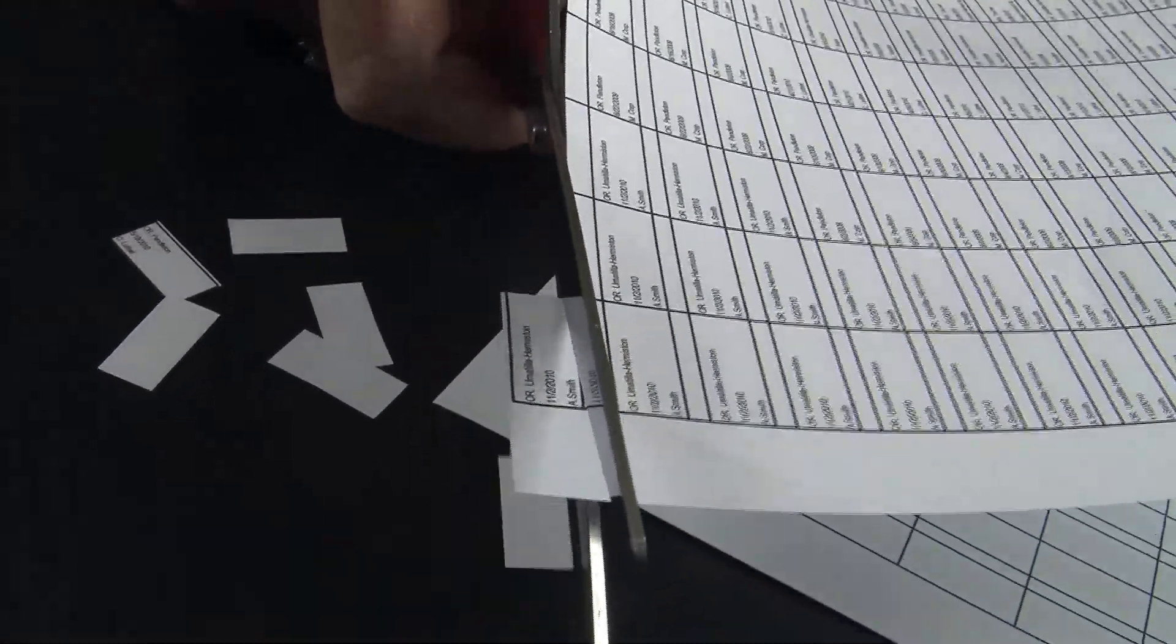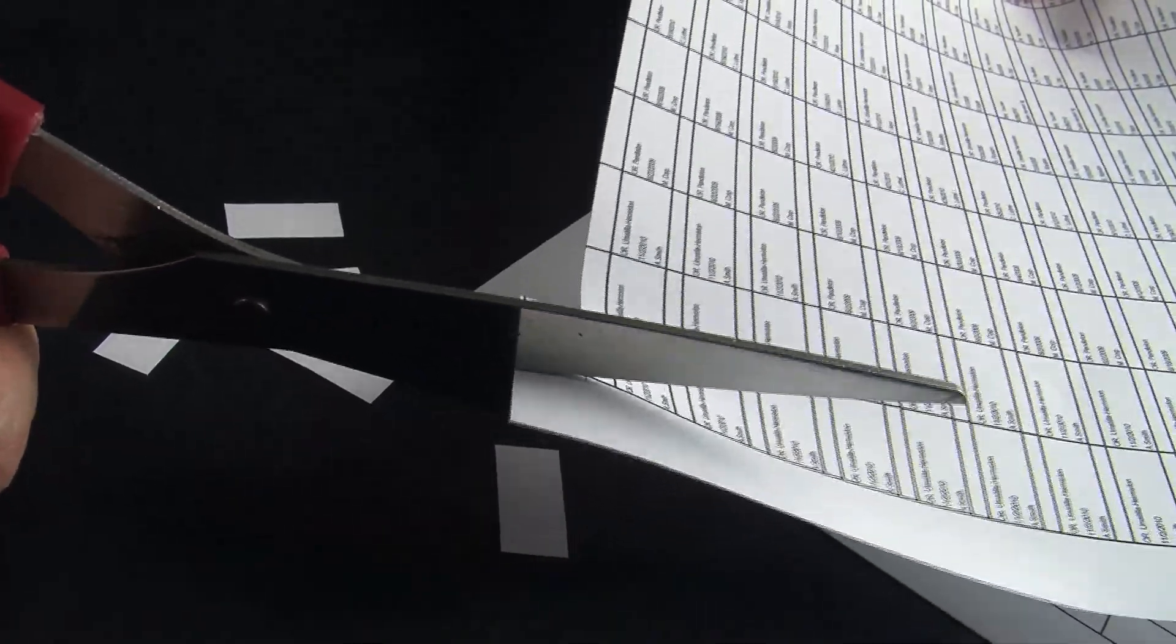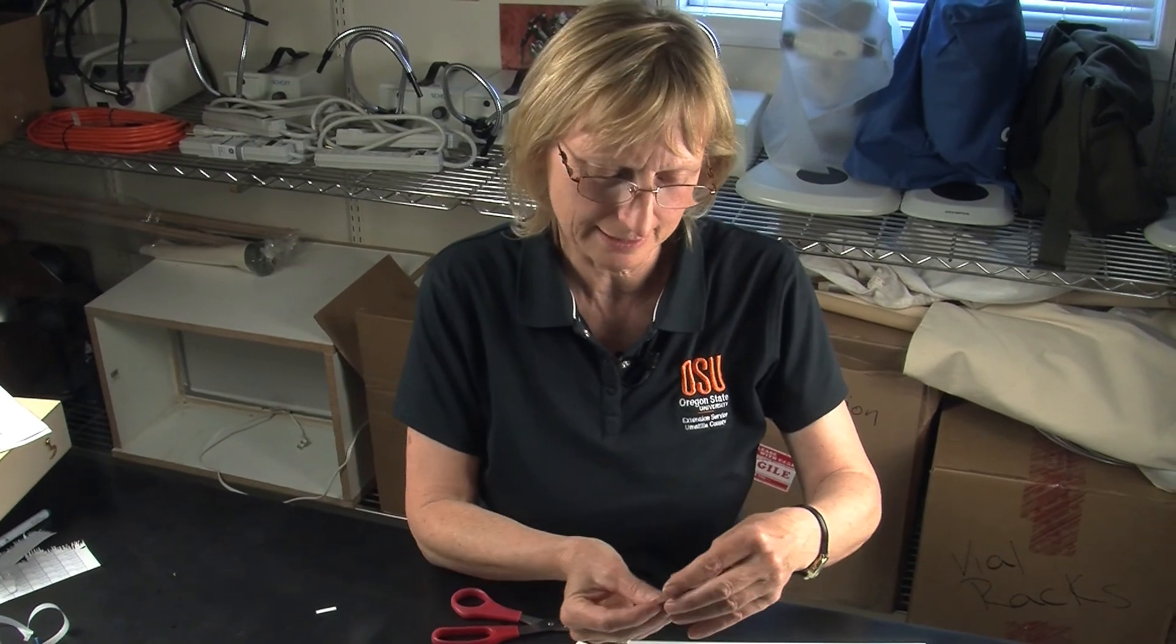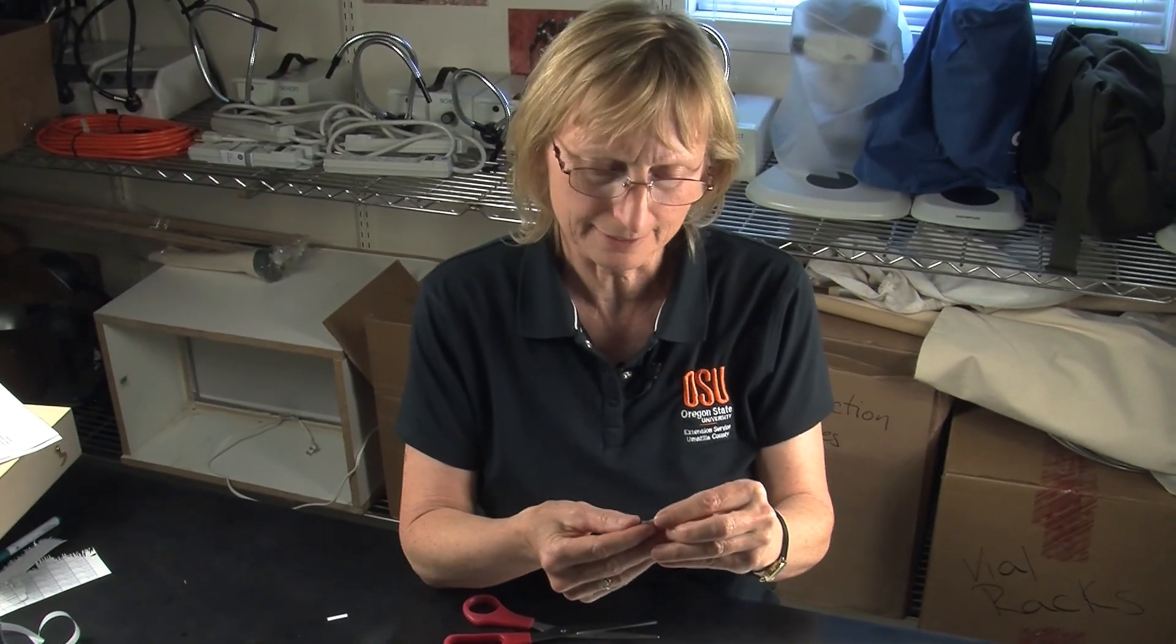Here is an example that says Oregon and then Umatilla County where we've been collecting. The next section includes the date collected followed by the collector's name.